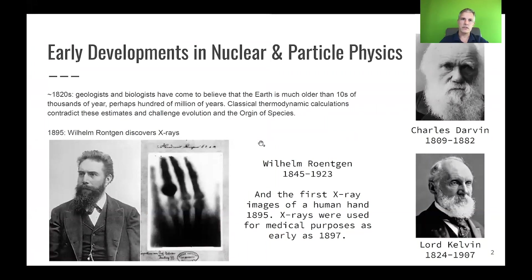Diving in: one of the questions of the time, going back almost 200 years, is how old was the Earth? About 200 years ago, people started to argue whether the 10,000 years long thought to be the age of the Earth were actually correct. Geologists and biologists argued that this cannot be true — they observed how slowly geological and biological processes such as erosion and evolution occur, and concluded that the Earth must be much, much older than 10,000 years.